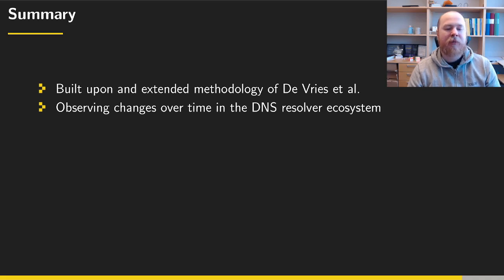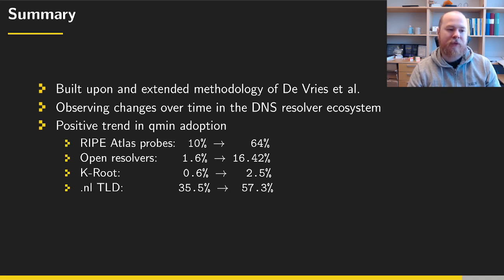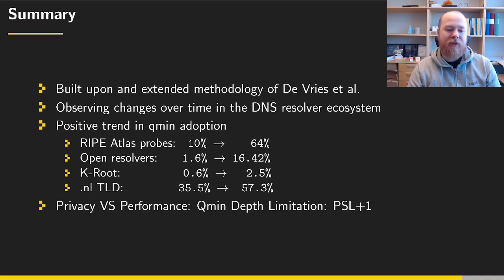In summary, we built upon and extended the methods of DeVries et al. and observed changes over time in the DNS resolver ecosystem. We find a positive trend in qmin adoption, demonstrated through both active and passive measurements using different methods and viewpoints. We also discussed trade-offs between privacy and performance, and suggest using a public suffix list as a heuristic for when to stop minimizing queries.